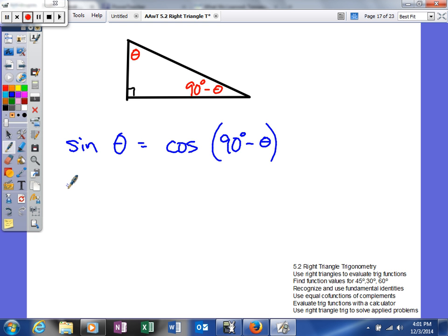Moving on, the secant of your angle equals the cosecant of your complement. And of course, it also works the other way. The secant of the complement equals the cosecant of your actual angle.